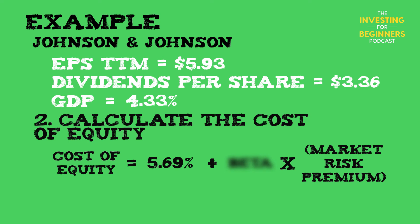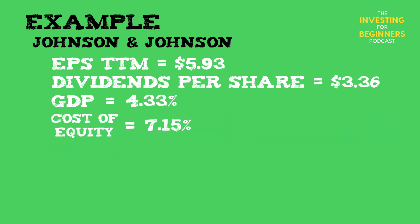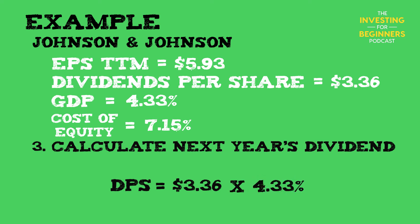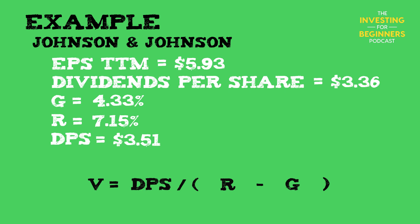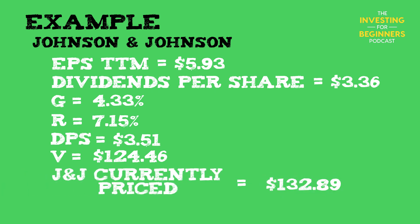Cost of equity equals 5.69% plus 0.63 times 2.33%, giving a cost of equity of 7.15%. Before we plug in our numbers, let's calculate next year's dividend based on our projected growth rate. The 2017 dividend for Johnson & Johnson was $3.36 times the growth rate of 4.33%, which equals $3.51 projected for next year. The formula is V equals DPS divided by R minus G. Plugging in our numbers: DPS equals $3.51, R equals 7.15%, G equals 4.33%. Therefore, the intrinsic value of Johnson & Johnson would be $124.46, compared to a current market price of $132.89 — indicating that Johnson & Johnson appears overpriced according to our formula.